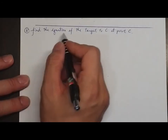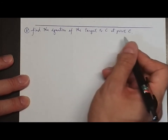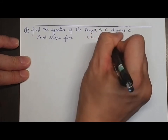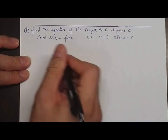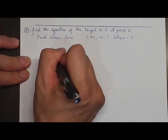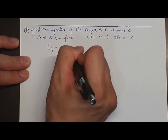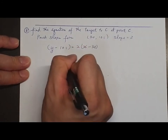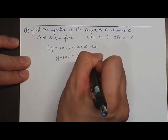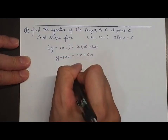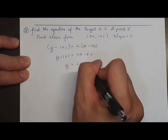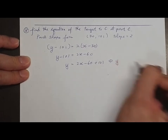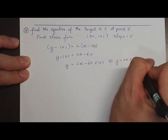Question 6b: Find the equation of the tangent to the curve at point P. We have point P as (30, 101) and slope equals 2. By the point-slope form, y minus 101 equals 2(x minus 30), so y minus 101 equals 2x minus 60, and y equals 2x plus 41. This is the equation of the tangent.